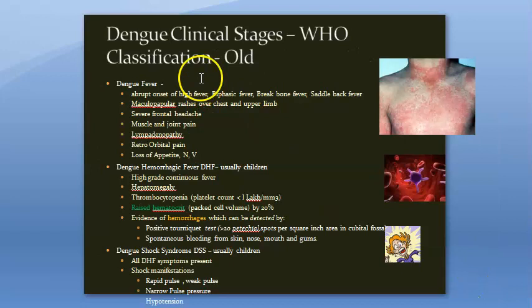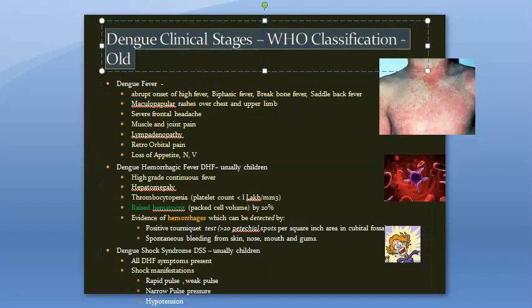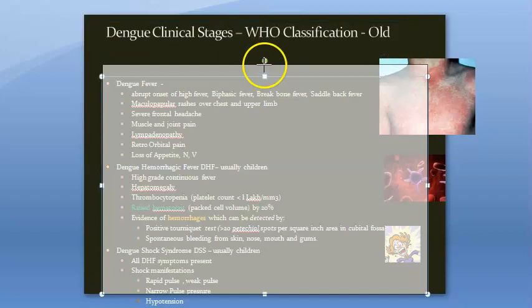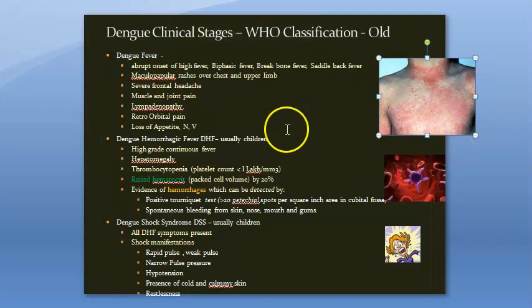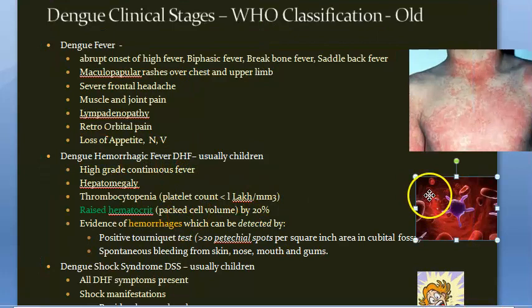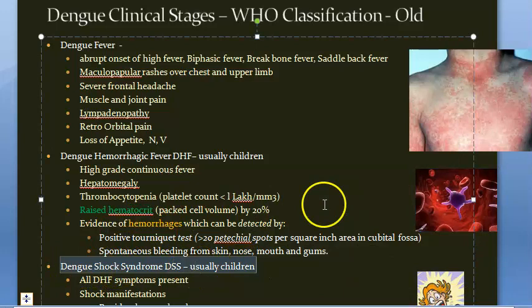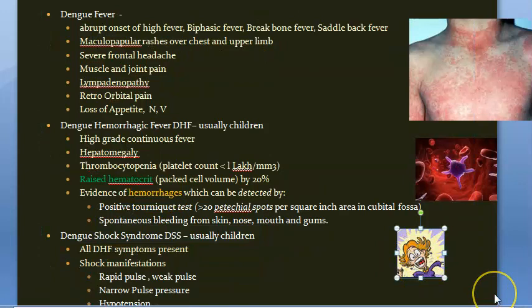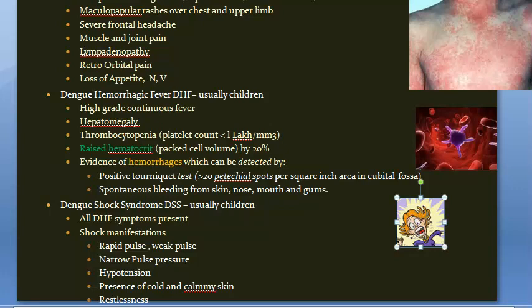Looking at the old WHO classification: dengue fever shows rashes on the chest and upper limbs; dengue hemorrhagic fever (DHF) involves reduced platelet count and significant hemorrhage; and dengue shock syndrome includes DHF symptoms plus shock — weak pulse, rapid pulse, narrow pulse pressure, and hypotension.